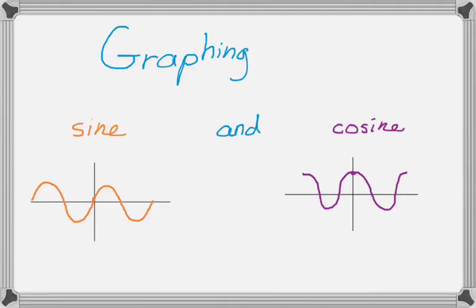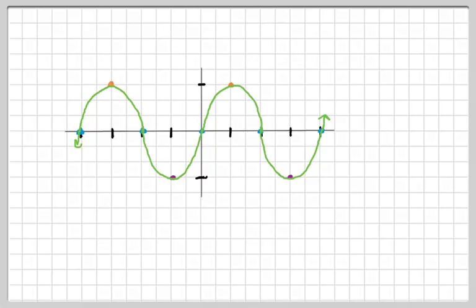We're going to talk about graphing sine and cosine in this video. The first thing you need to know is a little bit of terminology. This is actually a graph of sine. The graph of cosine looks basically the same — it definitely has the same properties, so let's look at those properties.